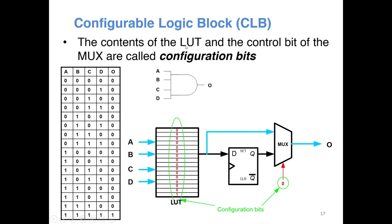The content of the lookup table and the control bit for the MUX together we call the configuration bits. For example, to build a 4-input AND gate, I use a 4-input lookup table with depth 2^4 = 16 memory locations. Since it is an AND gate, every location is 0 except the last case where the address is 1111 — only then is the output 1. Since I want a pure combinational 4-input AND gate, I make the MUX control signal 0 so that the LUT output becomes the CLB output. All these bits together — the LUT content plus the MUX control bit — are called the configuration bits.